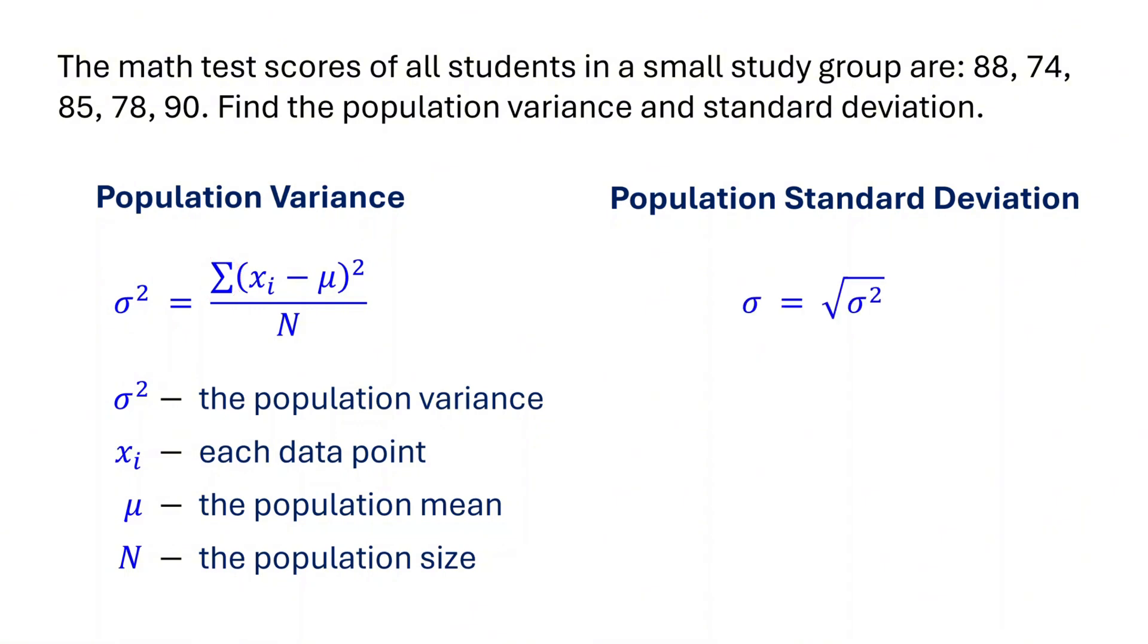The standard deviation of a population is simply the square root of the population variance. Here, sigma represents the population standard deviation. So to find the standard deviation, first calculate the variance and then take its square root. Now, let's put this into action with our example.